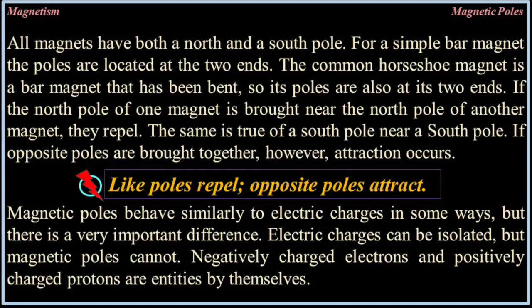All magnets have both a north and a south pole. For a simple bar magnet, the poles are located at the two ends. The common horseshoe magnet is a bar magnet that has been bent, so its poles are also at its two ends. If the north pole of one magnet is brought near the north pole of another magnet, they repel. The same is true of a south pole near a south pole. If opposite poles are brought together, however, attraction occurs. Like poles repel, opposite poles attract.